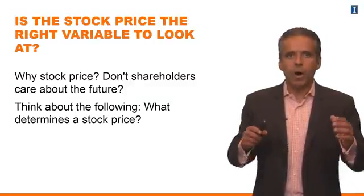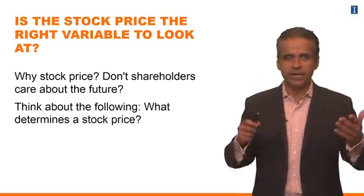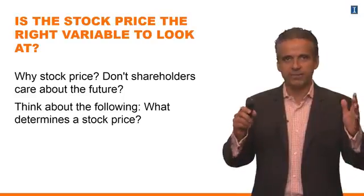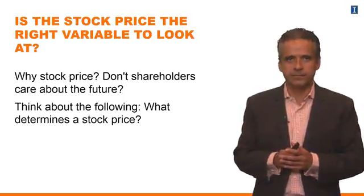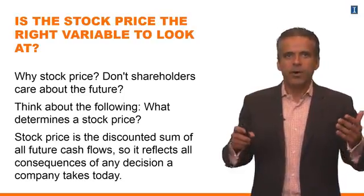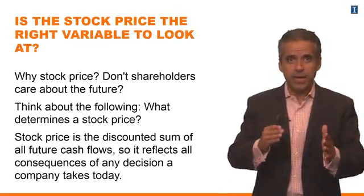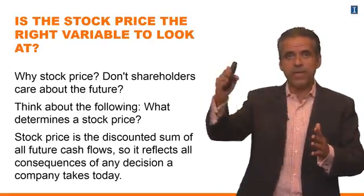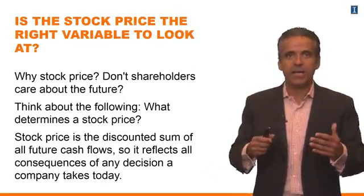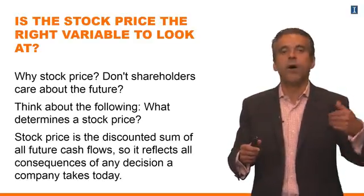But think about the following: what determines the stock price? This is something you may have covered in a previous course, and it's a very important idea in finance. The stock price should be the discounted sum of all future cash flows. So the stock price of a company today should depend on everything that is going to happen in the future. The stock price should reflect all the consequences of any decision that a company takes today — it's a forward-looking measure.